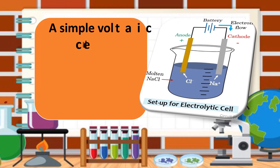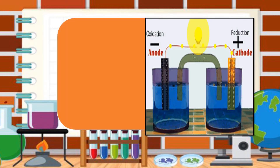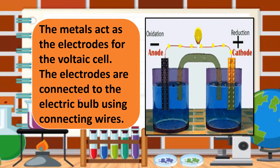A simple voltaic cell is made by placing two different metals in contact with an electrolyte. For example, we have two different metals here — we have chlorine and sodium — and we also have an electrolyte. So it will form a reaction. The metals act as the electrodes for the voltaic cell, and the electrodes are connected to an electric bulb using connecting wires.